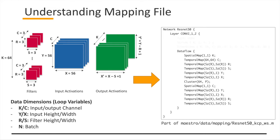For specifying dimensions, we use the conventions shown on the bottom left, so please be familiar with those dimension conventions. The second part of the mapping file is dataflow. Here we are trying to use KCPWS dataflow, which means K and C dimensions are going to be spatially mapped, and the entire dataflow is weight stationary — similar to NVDLA. If you have any ambiguity, please take a look at the previous tutorials again.